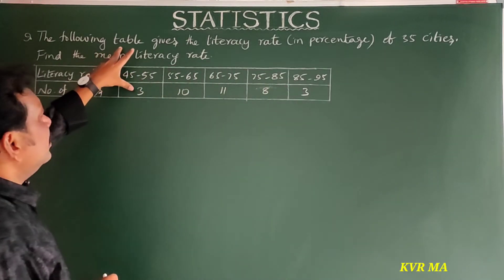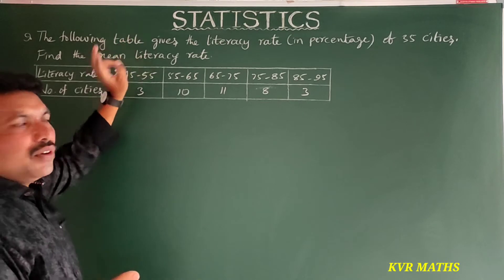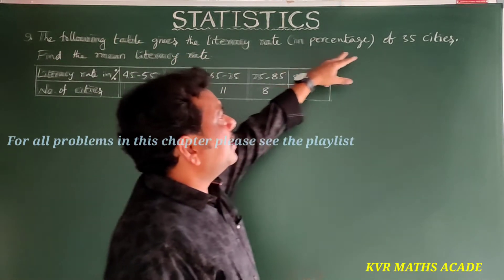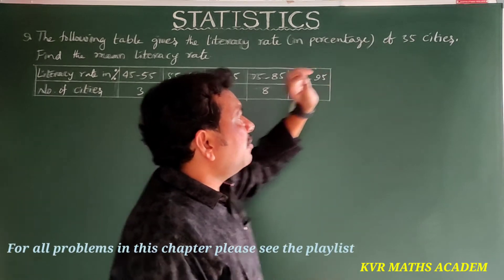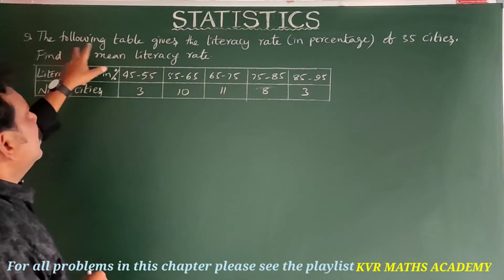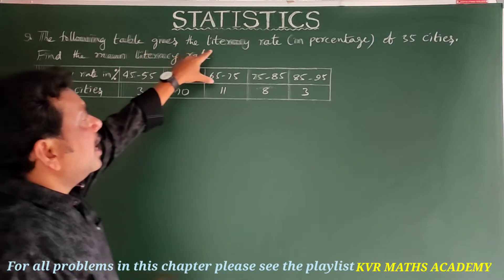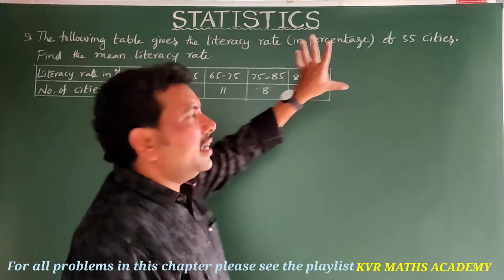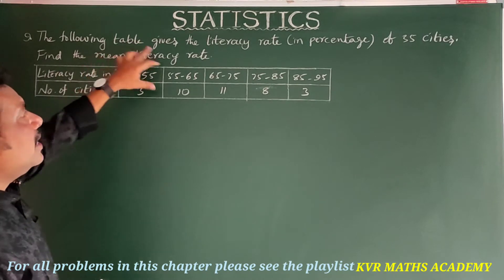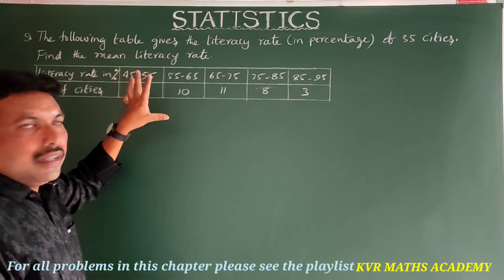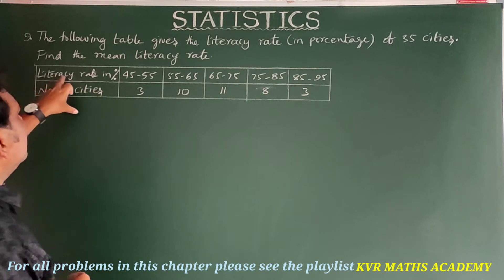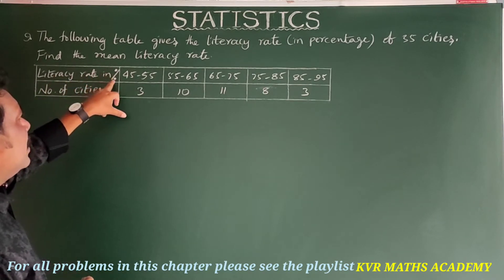This is the ninth question, the final question in Exercise 14.1. The following table gives the literacy rate in percentage of 35 cities. We have to find the mean literacy rate.